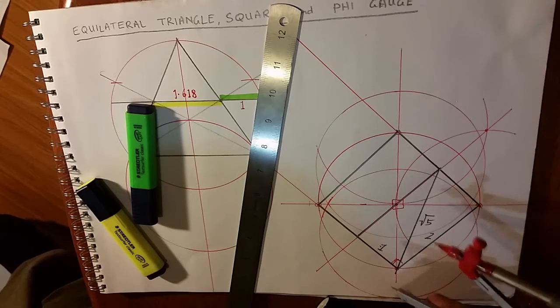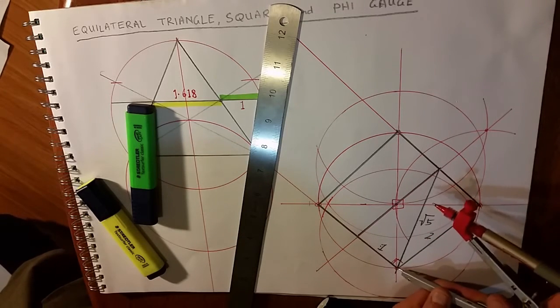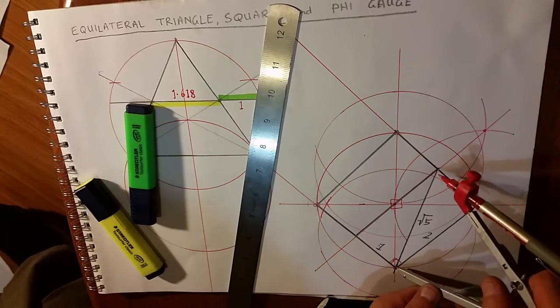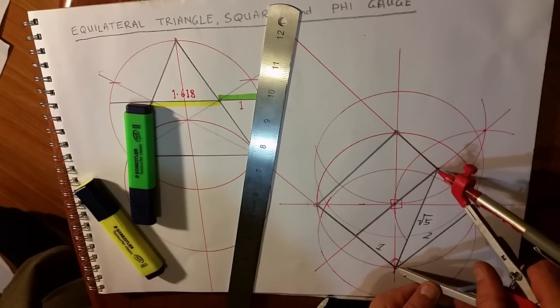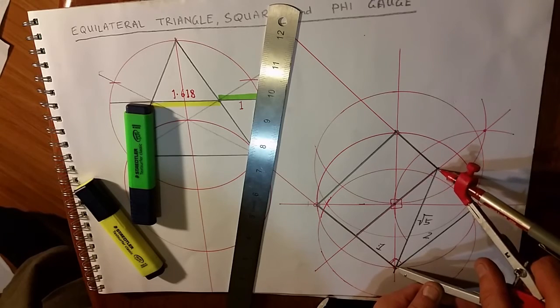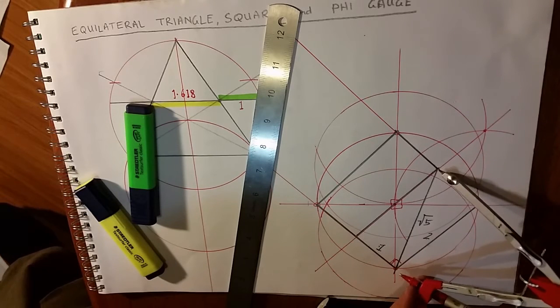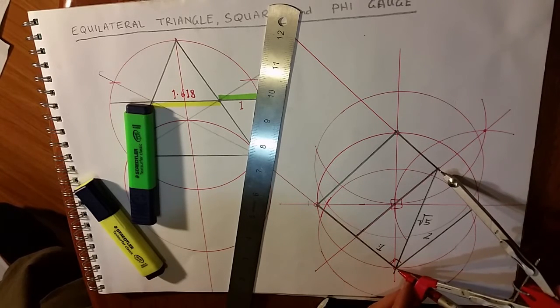Now we've set our compass to... This is a repeat. Hermetic triangles and Autumn's method for phi. So we've adjusted our compass to the square root of five.